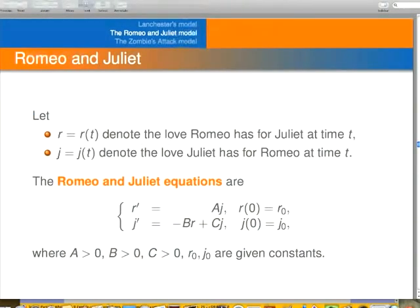Well, take little r of t to be the love Romeo has for Juliet, and little j of t to be the love Juliet has for Romeo. And here's r. The change in Romeo's love is correctly proportional to Juliet's love for Romeo.